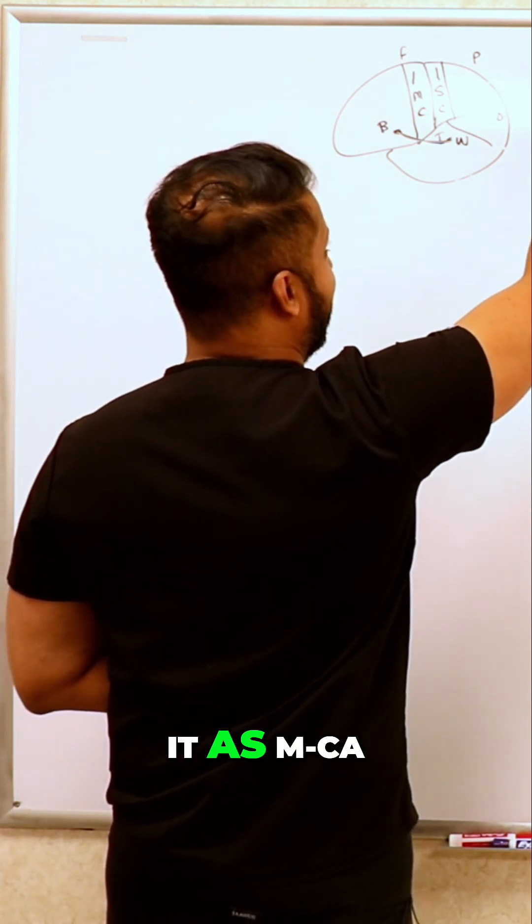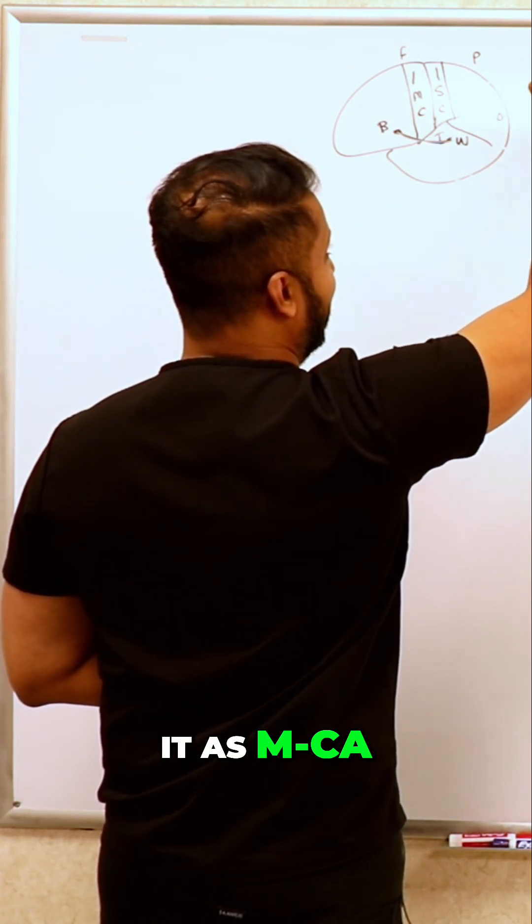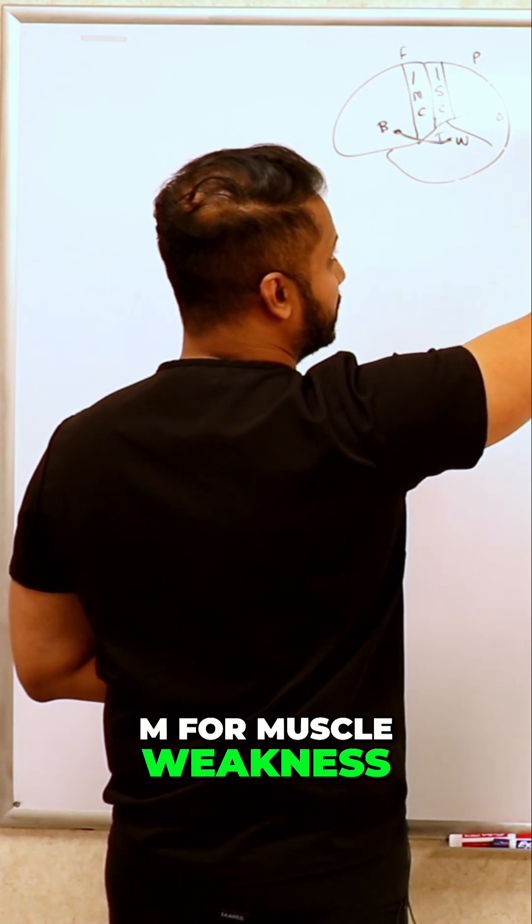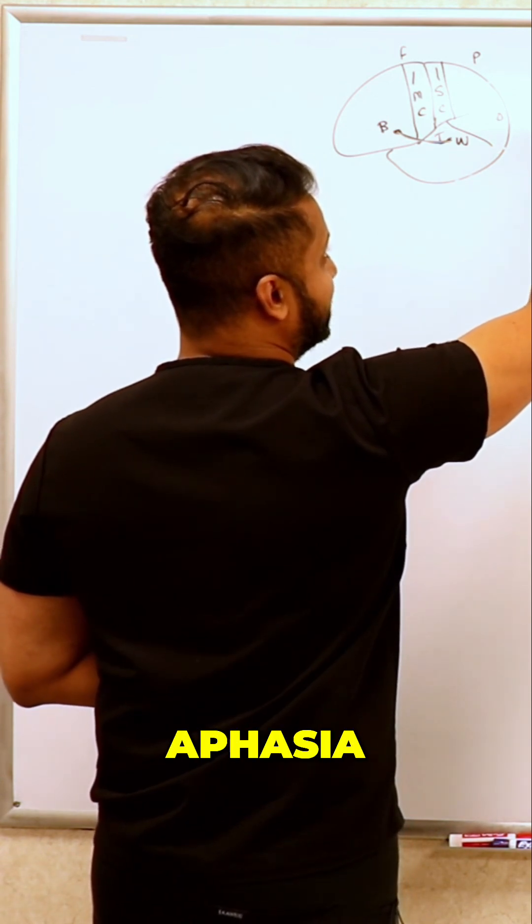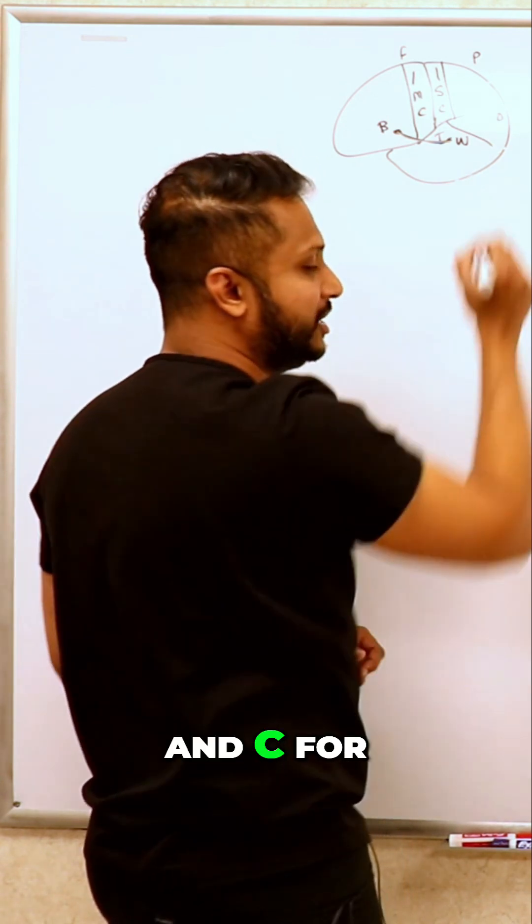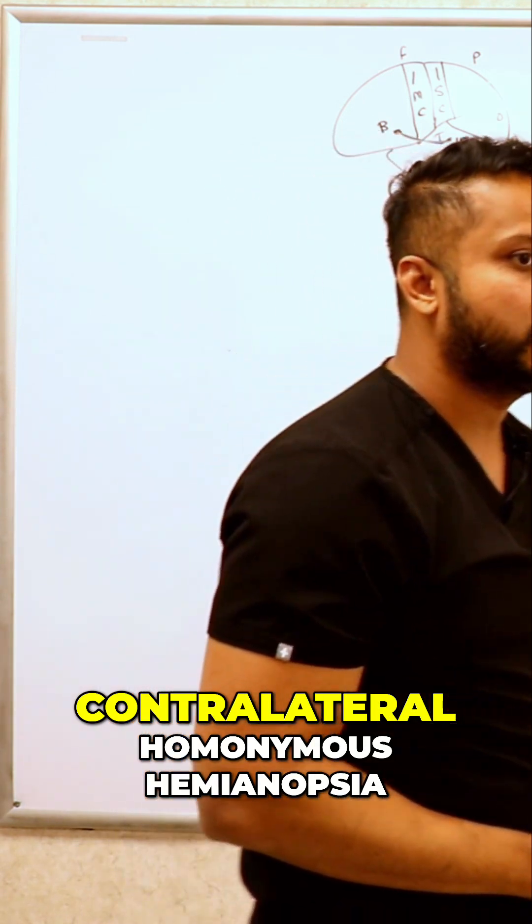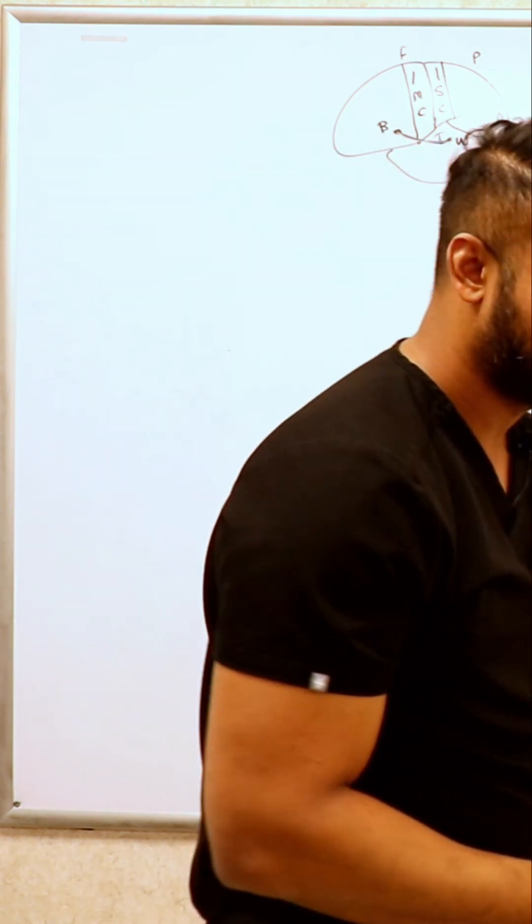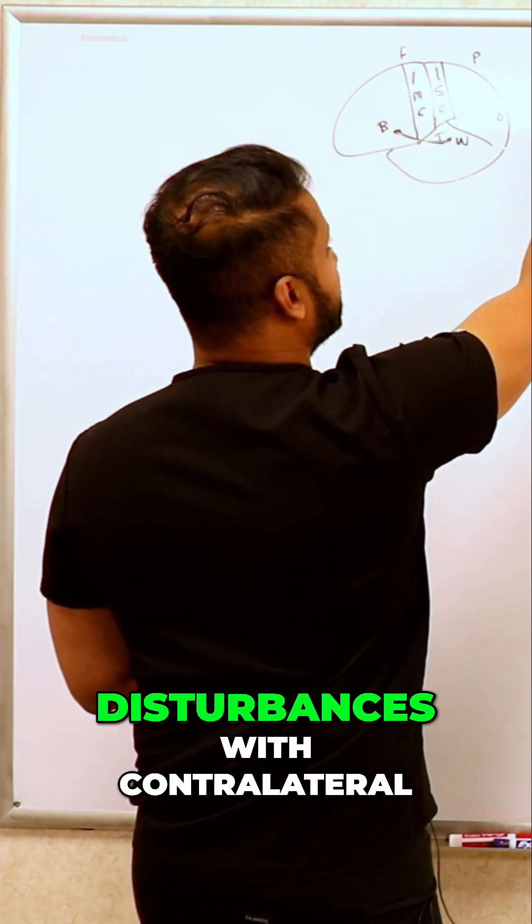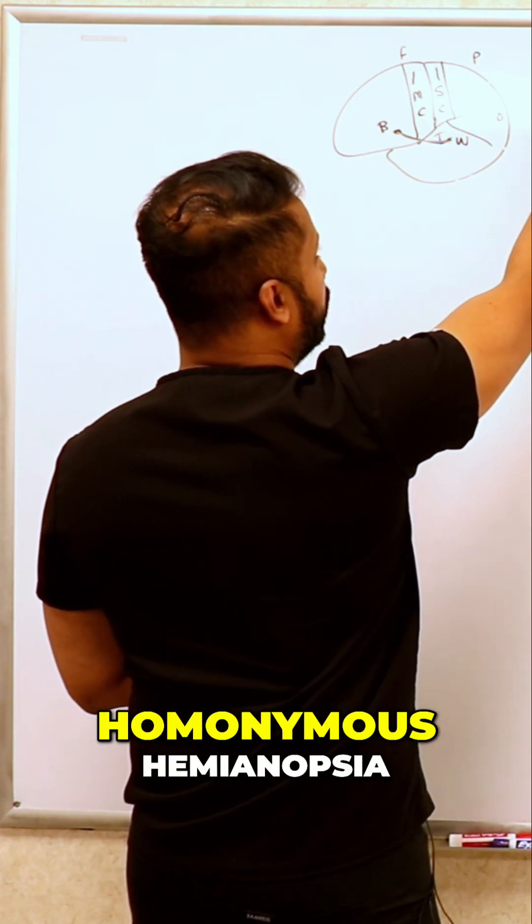So a lot of time, MCA stroke you can almost remember it as MCA: M for muscle weakness, A for aphasia, and C for contralateral homonymous hemianopsia. So you're gonna have visual disturbances with contralateral homonymous hemianopsia.